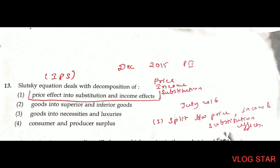Slutsky equation — always remember IPS: I = Income, P = Price, S = Substitution. The Slutsky equation deals with price effect split into substitution and income effect. The Slutsky equation explains the split between price, income, and substitution effects — IPS.